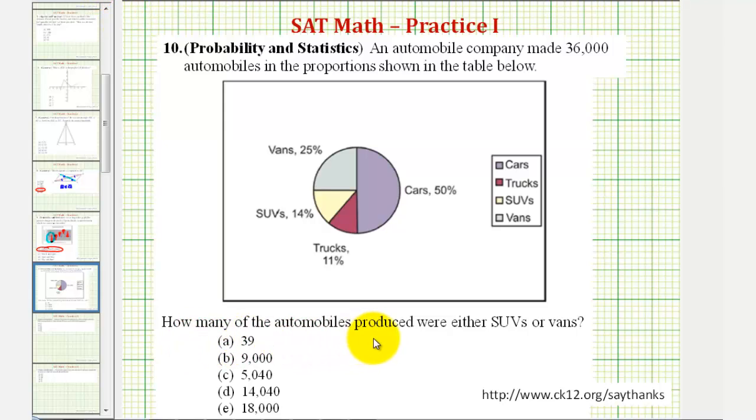Our question is how many automobiles produced were either SUVs or vans? Well, vans make up 25% of the automobiles and SUVs make up 14% of the automobiles.